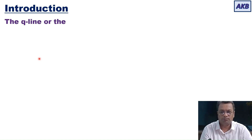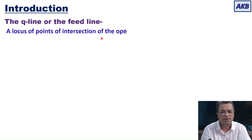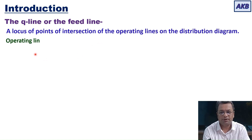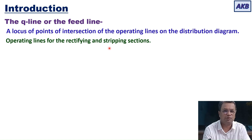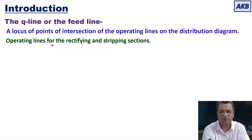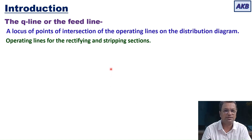The Q-line or the feed line is the locus of points of intersection of the operating lines — the operating lines for the rectifying and stripping sections. When you plot the operating lines on the distribution diagram they are going to intersect, and the intersection point of these two lines will be moving on the distribution diagram as the slopes of the operating lines change. The locus formed by these points of intersection is the Q-line or the feed line. I have derived the equation in my previous video.